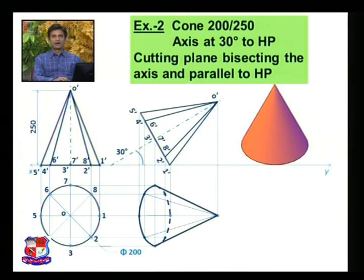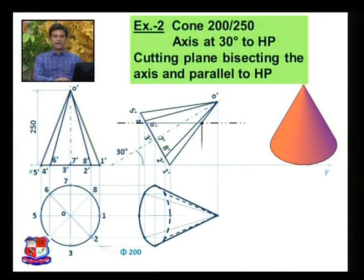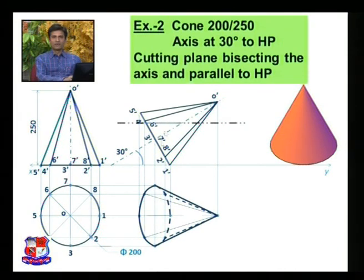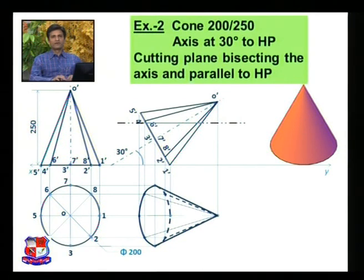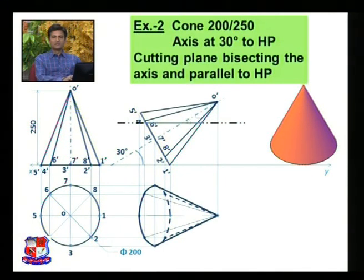The cutting plane bisects the axis and is parallel to the HP. To draw the cutting plane: find the midpoint of the axis — it is somewhere here. From this midpoint draw a horizontal line. When the cutting plane is parallel to the horizontal plane, it cuts the front view as a horizontal line. So in the front view, this horizontal line is drawn. Now find out the points of intersection between the cutting plane and the imaginary generators on the outer periphery of the cone.